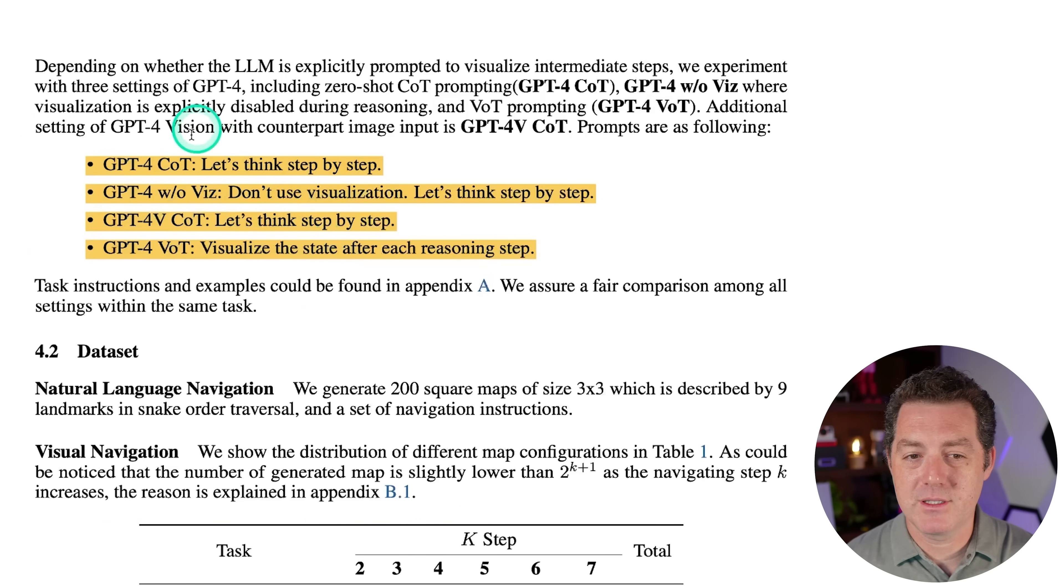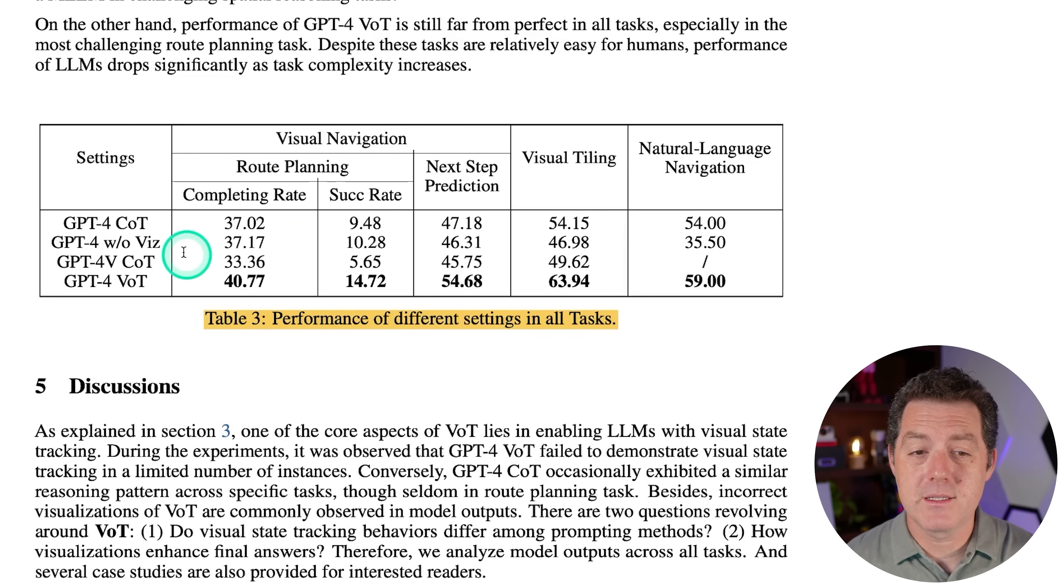And so they tested four different versions. And they're using GPT-4. So first, GPT-4 with chain of thought. So let's think step by step. GPT-4 without visualization. So don't use visualization, the techniques that we're talking about today. Let's think step by step. Then GPT-4 with vision. So the ability to interpret what's in an image. Let's think step by step. And then GPT-4 with VOT. So visualize the state after each reasoning step. Now let's look at the performance. So as you can see, all the bold across the board is where it performed best. So first for route planning, we have the completing rate and we have GPT-4 with VOT as the best. Then we have the success rate far superior, nearly 50% greater than the second place GPT-4 without visualization. Next step prediction, visual tiling, and natural language navigation. Across the board, VOT prompting technique just wins.